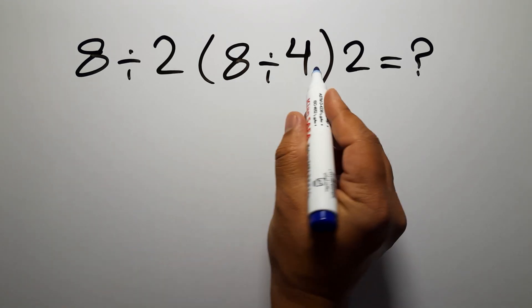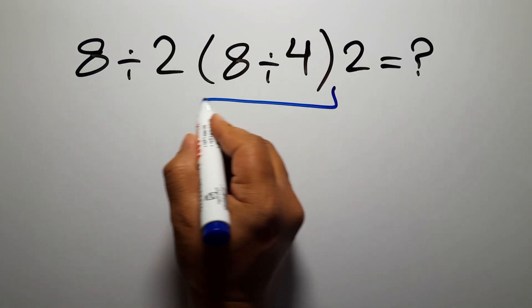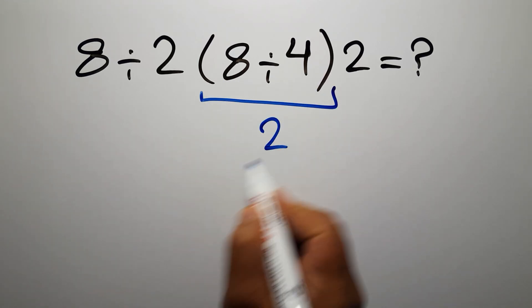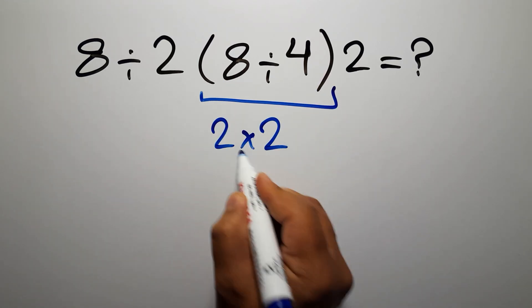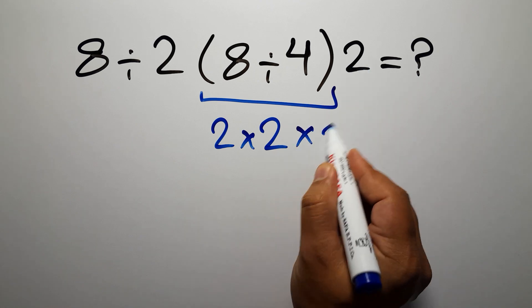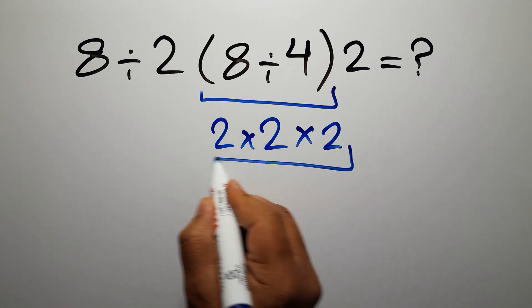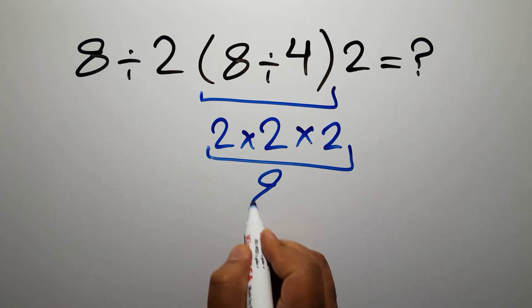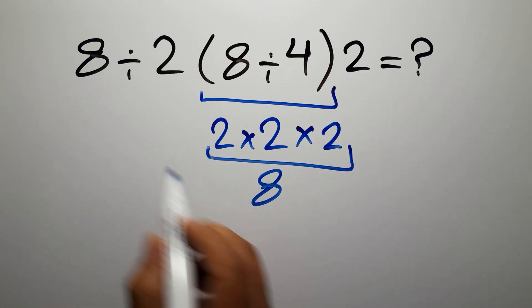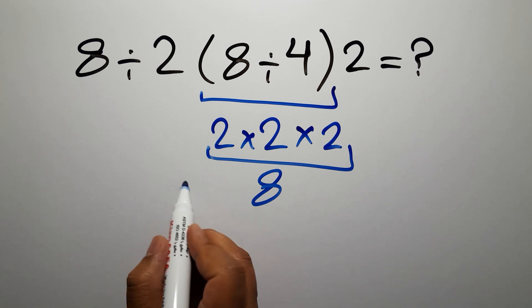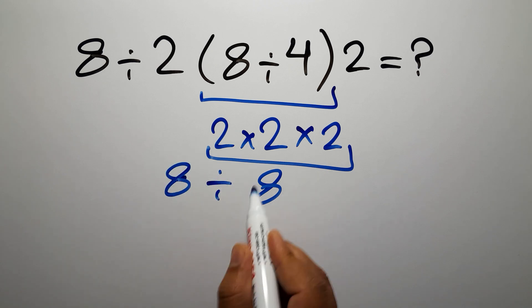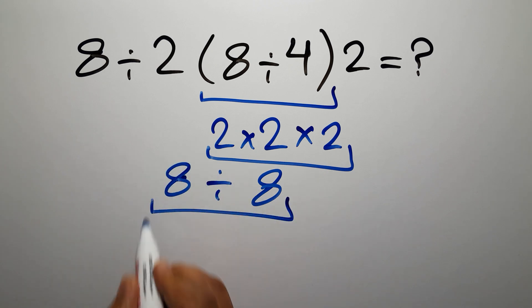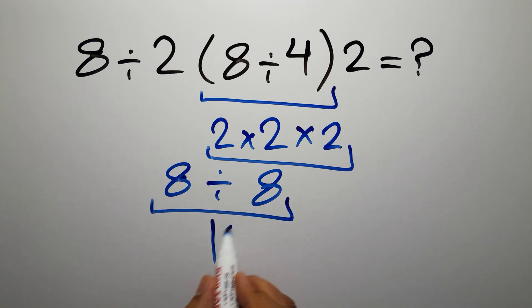8 divided by 4 gives us 2, and 2 times 2 times 2 which equals 8, so 8 divided by 8 gives us 1. But this answer is not correct.